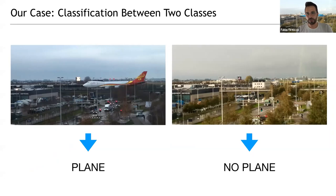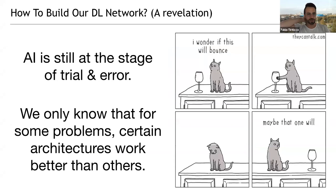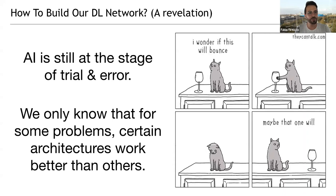For me, my journey started with a revelation: artificial intelligence is really still at a stage of trial and error. There is no way to write some algorithm that we know deterministically will work. What we know is that for certain problems such as image recognition, certain architectures work better than others — that's really all we know about it.